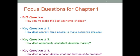The focus questions for chapter one that I want you to keep in mind — the big picture question is: how can we make the best economic choices possible? That's really the big overarching question that we're going to explore. But there are three other key questions to keep in mind. Key question number one: how does scarcity force people to make economic choices? Number two: how does opportunity cost affect decision making? And number three: how does a nation decide what and how much to produce? These are the key questions we're going to be focusing on throughout chapter one.